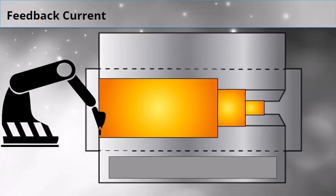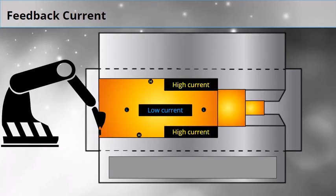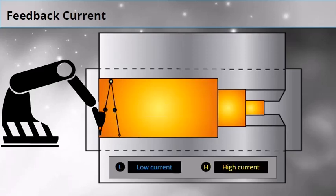TAST measures feedback current and adjusts the robot's path accordingly. There is low current in the center of the weld and high current at the edge of the weld. When TAST registers a current peak at the end of the weave, it changes direction.